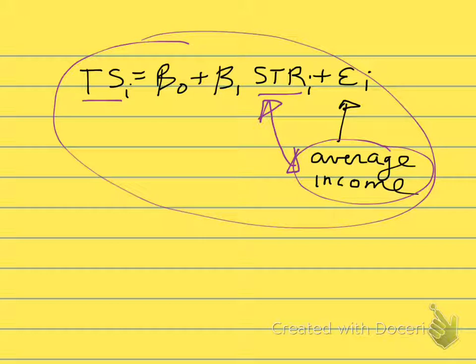When we run our regression and find the coefficient beta 1 hat equals negative 2.28, it looks like high student-teacher ratio is associated with lower test scores. But how do we know that high student-teacher ratio might be correlated with low average income? Where there are high students per class, that might also be places with low income.